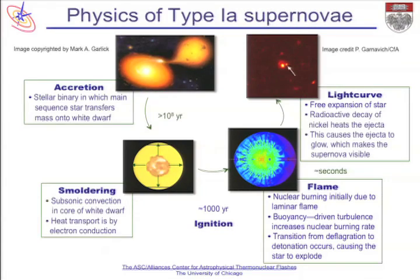So I showed you what a thermonuclear-powered supernova looks like. What's the physics that causes it to happen? There are four phases or stages I wanted to talk about. I'll be talking about what's called the single degenerate model, where there's a white dwarf star—like our sun will become later in its life—in a binary with a normal star, drawing hot gas into an accretion disk that accretes onto it, building up its mass over hundreds of millions of years.